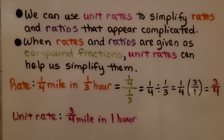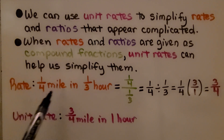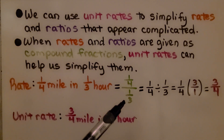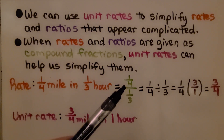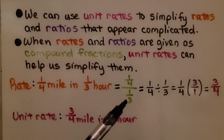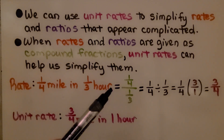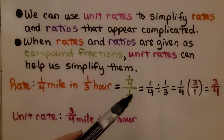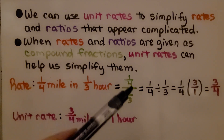We can use unit rates to simplify rates and ratios that appear complicated. When rates and ratios are given as compound fractions, unit rates can help us simplify them. If our rate is 1/4 mile in 1/3 hour, we can write 1/4 over 1/3. That means 1/4 divided by 1/3 — the fraction bar in the compound fraction means division.